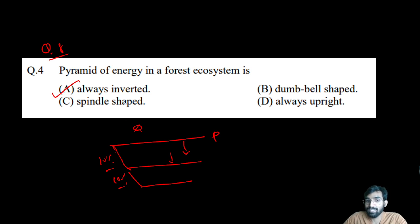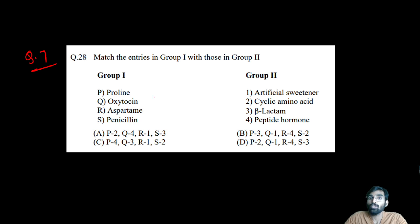Question number nine: Match the following - proline, oxytocin, aspartame, and penicillin with artificial sweetener, cyclic amino acid, beta-lactam, and peptide hormone. If you remember two to three things you can solve this. Proline is a cyclic amino acid, so P2. Oxytocin is a peptide hormone. Aspartame is artificial sweetener and penicillin is beta-lactam. So S3, R1, P2, and Q4, that is option A.